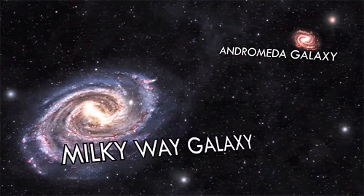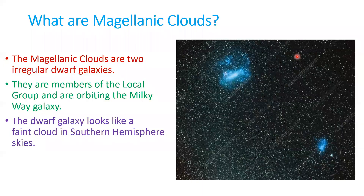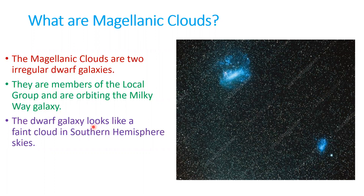The Andromeda galaxy is the nearest galaxy to our Earth. What are the Magellanic Clouds? The Magellanic Clouds are two irregular dwarf galaxies. A dwarf galaxy is not as big as the Milky Way galaxy — they are small galaxies with irregular shapes. They are members of the local group and are orbiting the Milky Way galaxy. This dwarf galaxy looks like a flying cloud in the southern hemisphere skies.